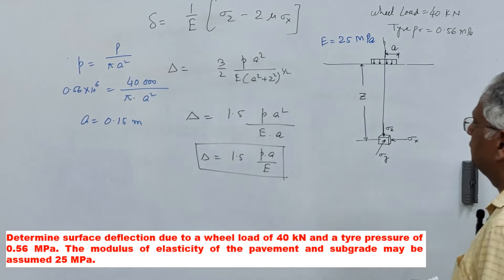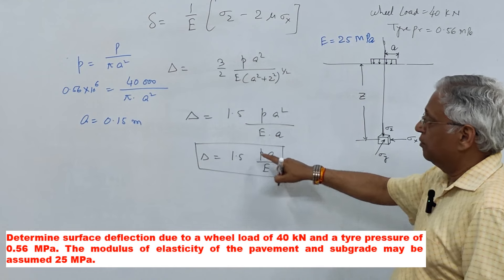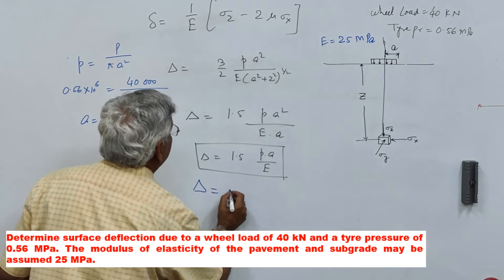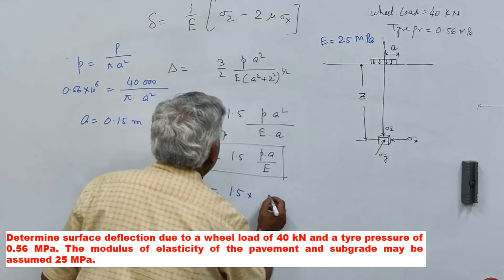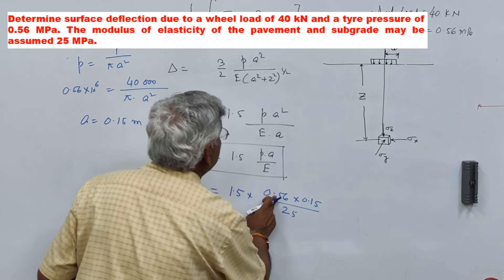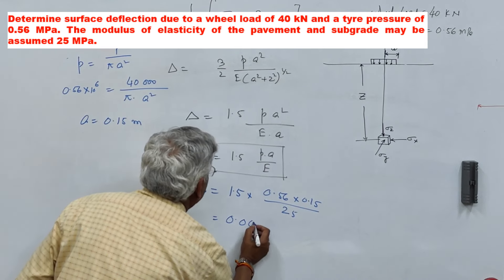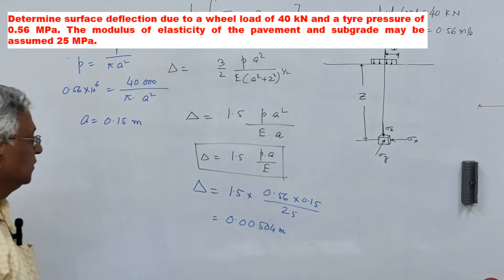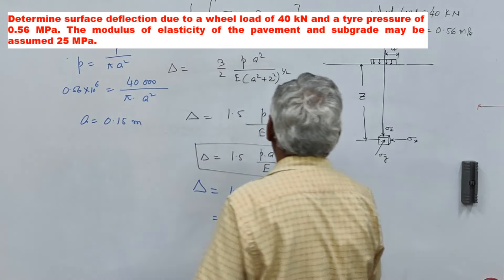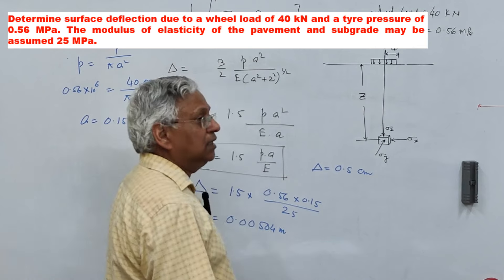Now we know P = 0.56 MPa, A = 0.15 m, and E = 25 MPa. Substituting into the surface deflection formula: delta = 1.5 × 0.56 × 0.15 / 25. This gives 0.00504 m, which equals 0.5 cm or 5 mm. So the surface deflection is 0.5 centimeters.